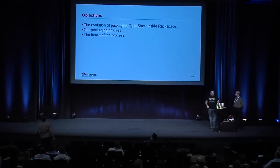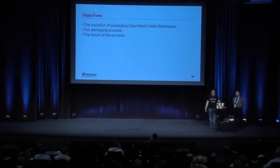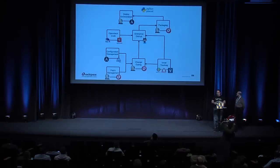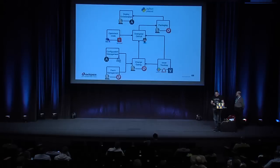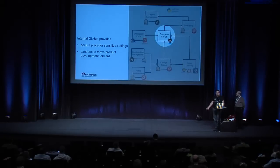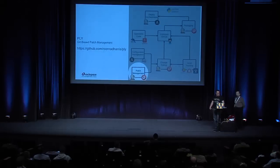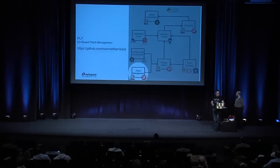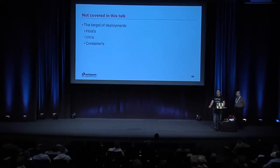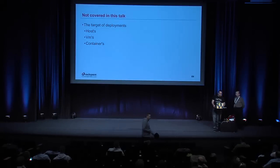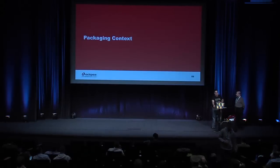We have a couple of objectives for this talk. We're going to cover the evolution of our packaging of OpenStack inside Rackspace, the process we use for packaging, and the future of that process. We'll talk about our interactions with Git to build packaging, our Ply tool for patch management, and the packaging system itself. We're not going to cover deployments or deployment targets — only the object of what we deploy.